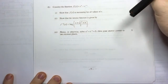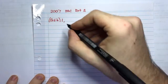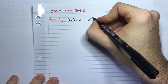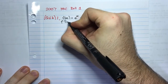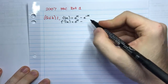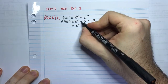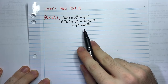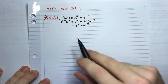Alright, so Part 1. I have my function and I need to show that it's increasing for all values of x. So let's write the function down: f(x) = e^x − e^(−x). To show something is increasing for all values of x, let's take its derivative. So f'(x) equals the derivative of e^x, which is e^x, minus the derivative of e^(−x), which is −e^(−x). So I have e^x plus e^(−x). Now if this is increasing for all values of x, its derivative should be greater than zero.